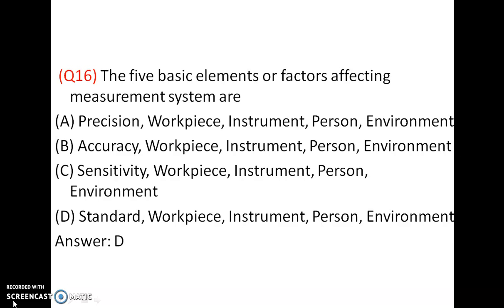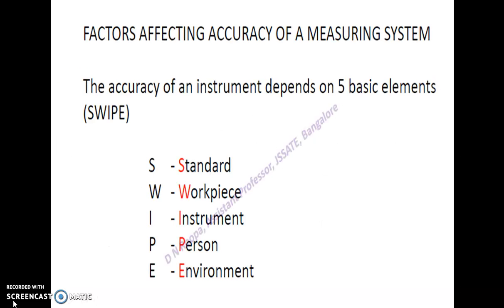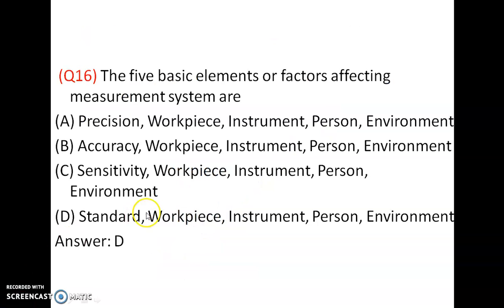Question number 16: The 5 basic elements or factors affecting the measurement system are — Standard, Workpiece, Instrument, Person, and Environment. So the answer is D: Standard, Workpiece, Instrument, Person, and Environment.